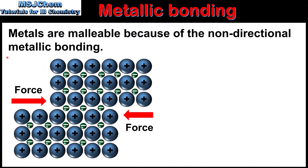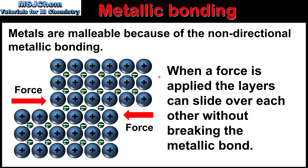Next we look at the reason why metals are malleable. Metals are malleable because of the non-directional bonding in the metallic structure. In this diagram we can see the effect of a force on the metallic structure. When the force is applied the layers can slide over each other without breaking the metallic bond, and this explains why metals can be bent into shape. When a metal is bent the layers slide over each other but the metallic bond itself is not broken, due to the non-directional metallic bonding.